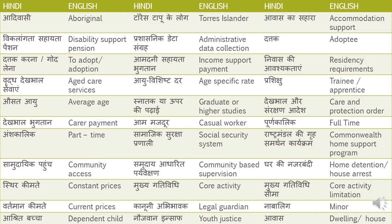Vridh dekbhal sevaain — that is Aged Care Services. Vridh means aged or old age, dekbhal is care, and sevaain is services. Ayu vishisht dar — that is Age Specific Rate. Prashikshu — Trainee or Apprentice, or you can even say Intern. Ausat ayu — that is Average Age.